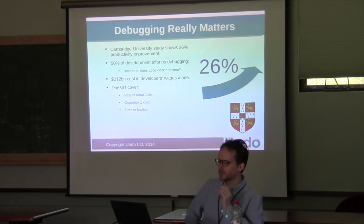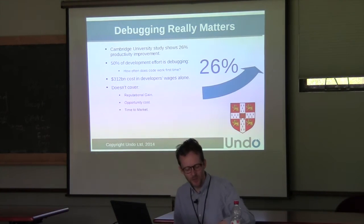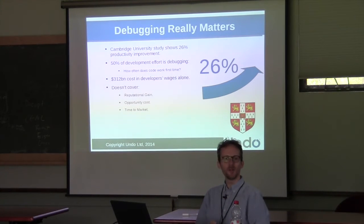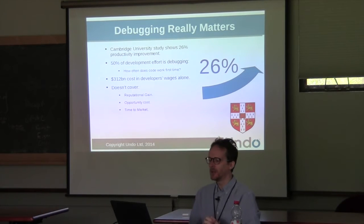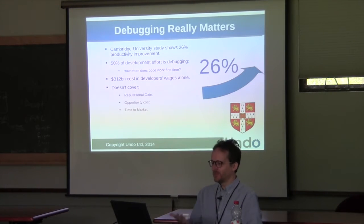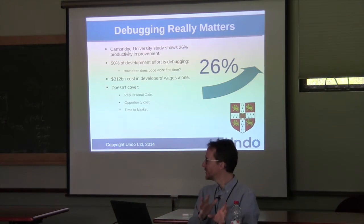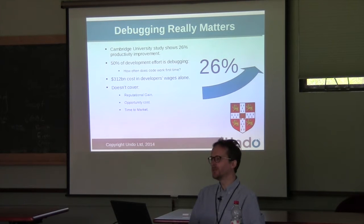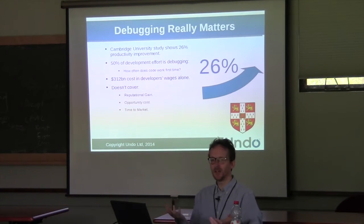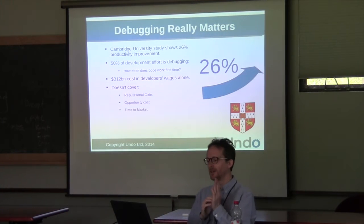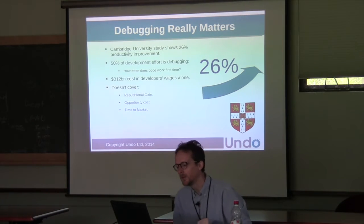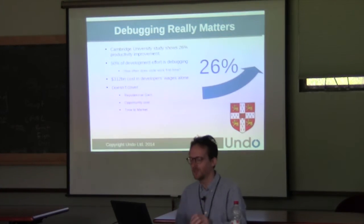It's one of those things we don't like to admit — we spend lots of our time debugging. There are various estimates; this is a particular study from Cambridge University in the UK. Probably half of our time is spent debugging, maybe depending on how well you write the code in the first place. If you can make debugging much more efficient, you can have massive improvements to the efficiency of developing code, which means we can write more interesting code and not spend hours tracking down memory corruptions.